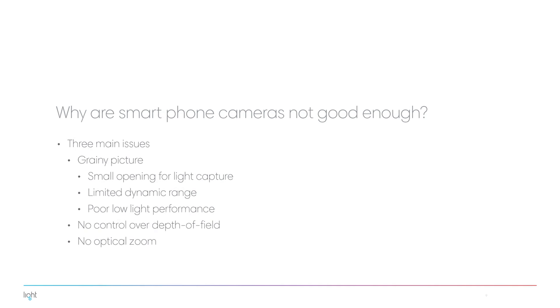I've argued that smartphone lenses are as good as they can be and sensors are high quantum efficiency, high pixel density sensors. So the question obviously arises: why don't smartphones take really good pictures? Why doesn't their quality match high-end cameras? There are a few issues. First, the pictures are grainy because they capture very little light — the absolute opening of a smartphone lens is very small, so they capture very little light. To make good pictures, you always need a lot of light. They also have limited dynamic range and very poor low-light performance as a result.